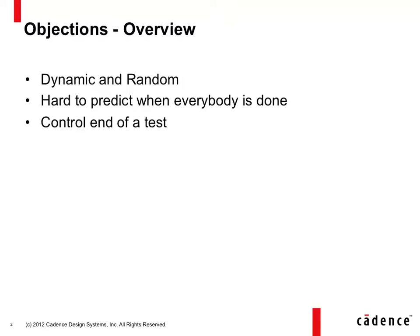Objections is basically a mechanism that allows every participating member to pull a veto right and control the end of the test this way. Independently, all the components can say they are done.